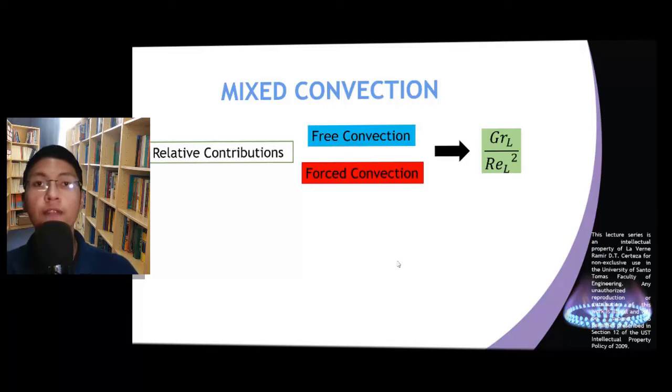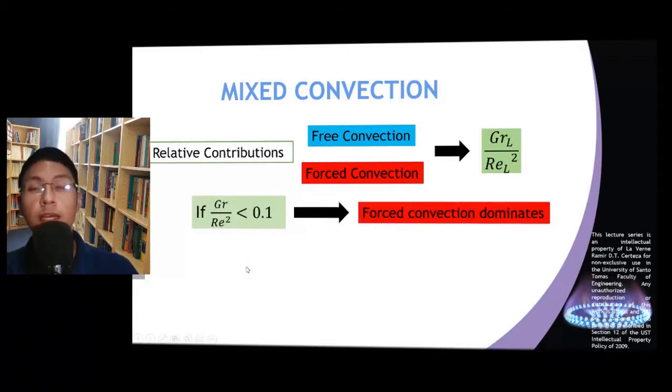Now let us delve deeper in how we can determine which between these two mechanisms is more dominant for a particular case. If this ratio is less than 0.1, then we can say that the forced convection dominates.